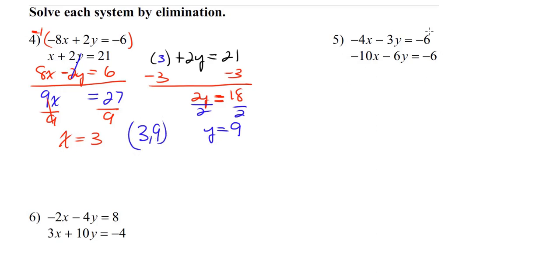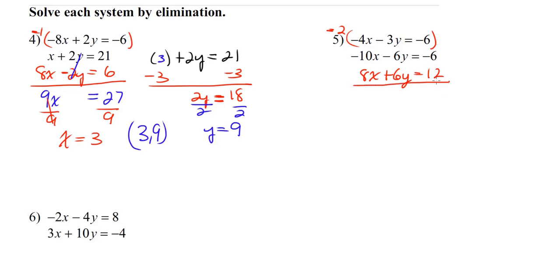Now let's look at number 5. We have negative 4x minus 3y equals negative 6, and negative 10x minus 6y equals negative 6. None of these variables are opposite each other, so we need to change one or both equations. The second equation has negative 6y and the first has negative 3y. If we change negative 3y to positive 6y, the y's will cancel. We do that by multiplying the entire first equation by negative 2, because negative 2 times negative 3 is positive 6. So: negative 2 times negative 4x is positive 8x, negative 2 times negative 3y is positive 6y, and negative 2 times negative 6 is positive 12.